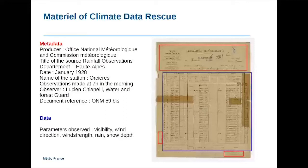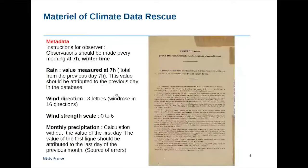So we know that the producer is the Office of National Meteorology, the National Meteorological Service at that time. We review all the documents generally to keep and to search all the metadata and data. The second page of the document is the instruction for observers, and in this sheet we have a lot of very important metadata.